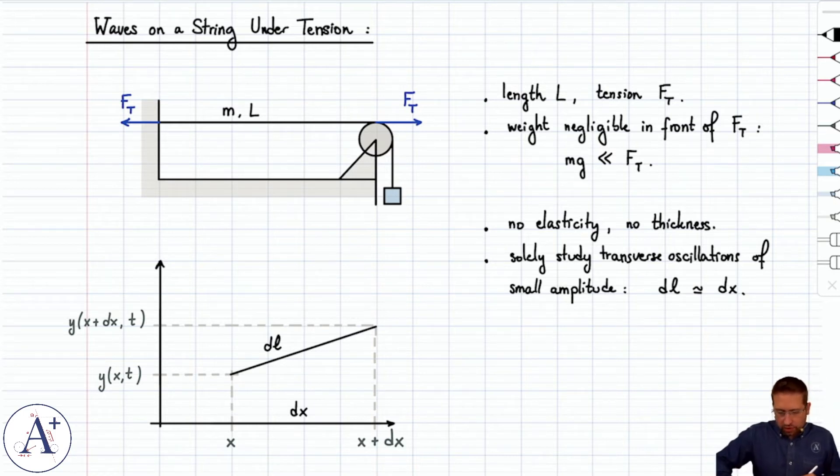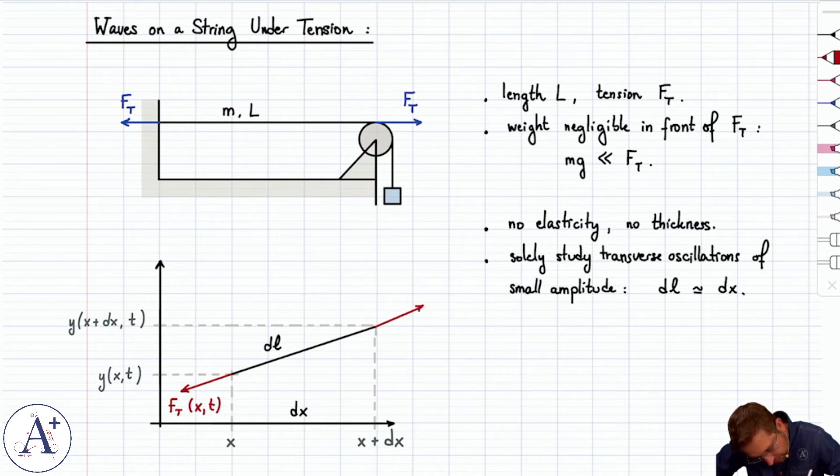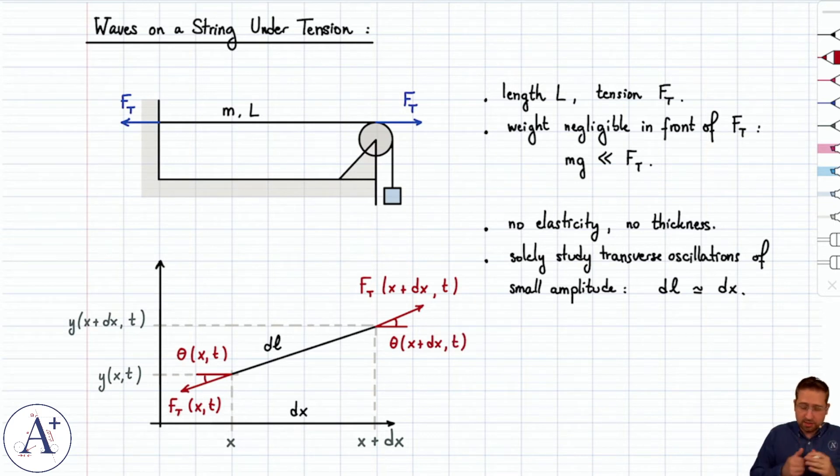I exaggerated the slant of this piece of string just to make it obvious and to not overcrowd our drawing, but overall the oscillations are in the y-direction and their amplitude remains quite small. Under these assumptions, we can apply Newton's second law. We would draw the tension force here on the left end, and we would call that F_T of x and t. And in contrast here on the other end, we would have F_T of x plus dx at the same time t. Here we'd get an angle, here we would also get an angle.